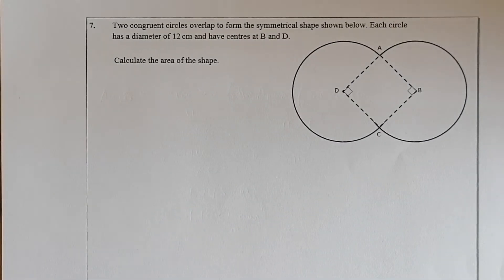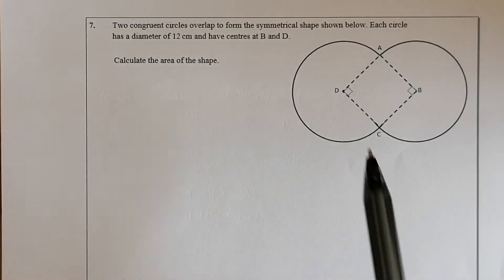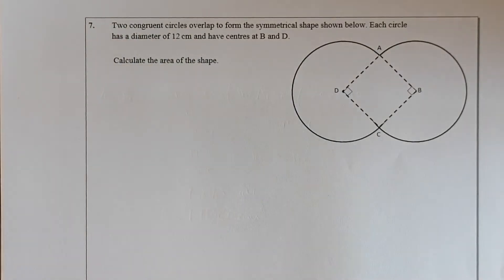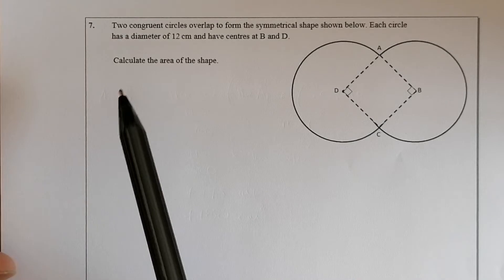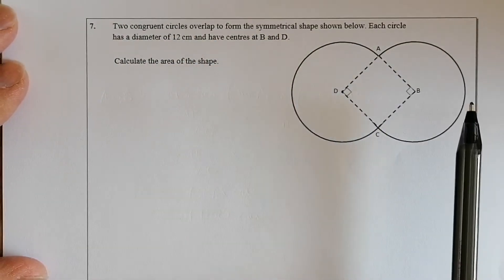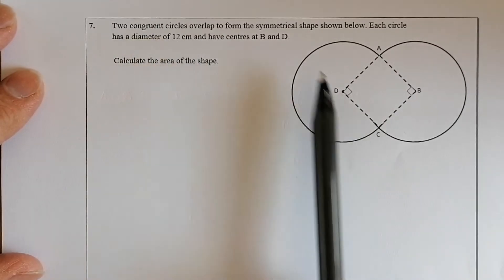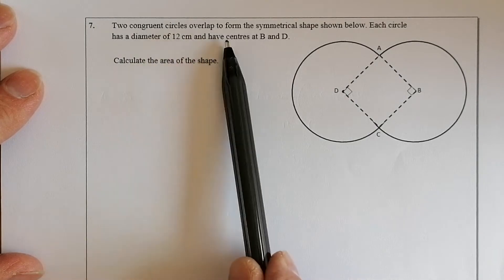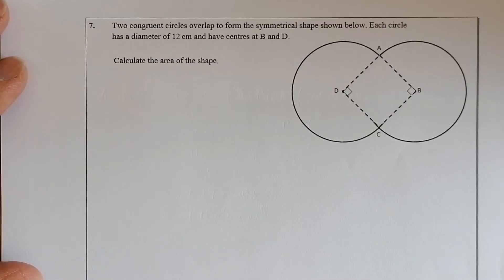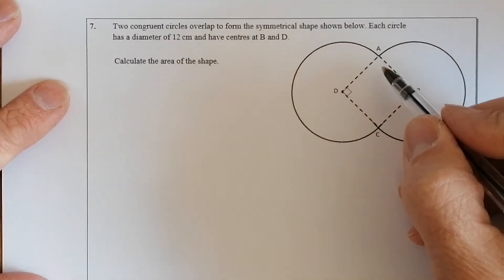A more complicated question now — question 4. We've got two congruent circles. Congruent means they're the same size, same area, same circumference, same radius, same diameter. They form a symmetrical shape. Each circle has a diameter of 12 centimetres, and the centres are B and D. Calculate the area of the shape. I'm going to work it out in three parts: the area of one sector, the area of the second sector (same as the first since they're congruent), and the area of the square in the middle.